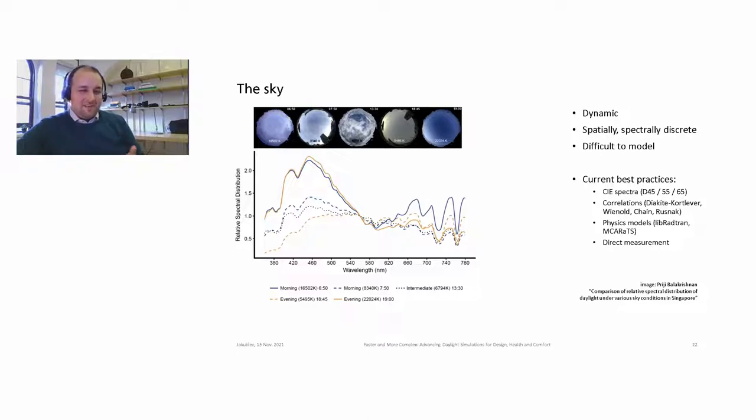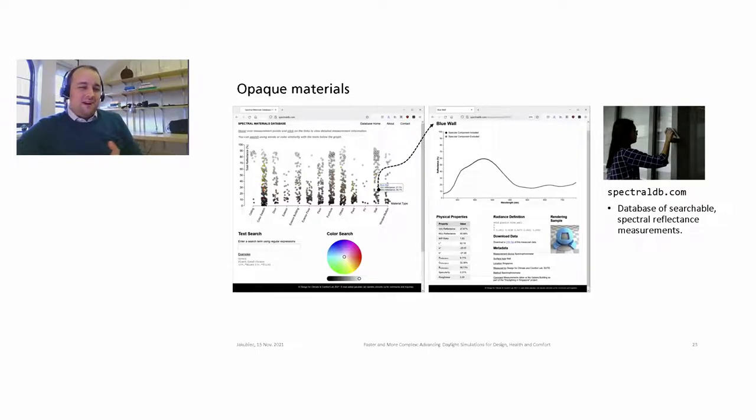And so the most difficult and perhaps the most onerous of these things we need to quantify is, in fact, the sky. The sky is super difficult. It's dynamic. It's spatially and spectrally discrete. And it's just difficult to model. So we can see some measurements from my colleague, Pridji Balakrishnan, at TU Berlin here, normalized to 555 nanometers, really showing the wide variety of characters the sky can take on. And these are total irradiance measurements, but if you break it down by a luminance distribution across the sky dome, it gets even harder. And so there's lots of different ways that have emerged to calculate this in practice. Just applying a CIE spectra, using kind of luminance correlations from the Perez model, or for measurement, physics-driven models like Libradtran or MCRATS, or even direct measurement. And then just applying that direct measurement into a simulation model. I'm going to leave you hanging on what is best there, but it's an ongoing field.